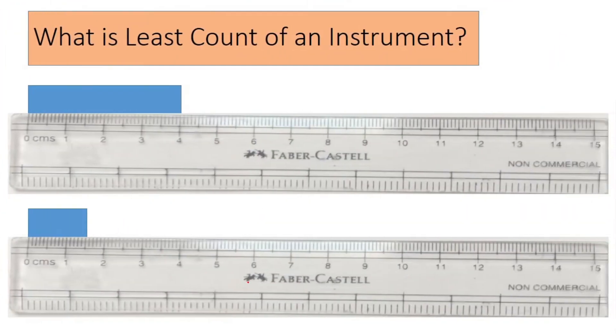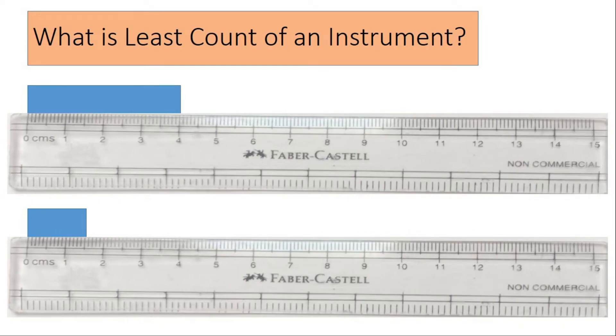Let's understand the meaning of the least count of an instrument. Here we have a rod and the length of the rod is measured with the help of a meter scale. You can see that between 0 and 1 there are 10 divisions: 1, 2, 3, 4, 5, 6, 7, 8, 9, 10.